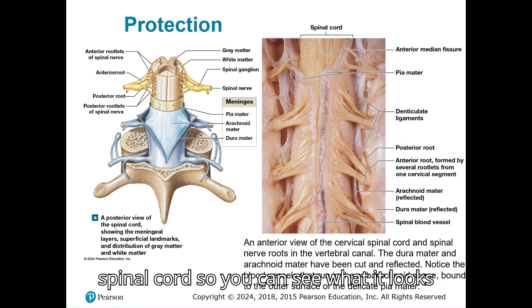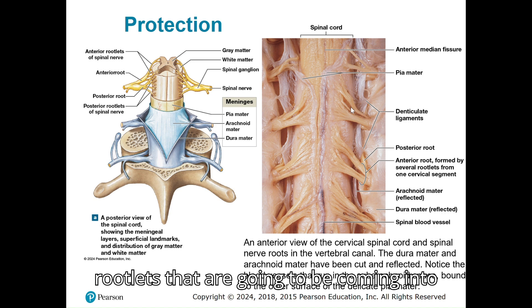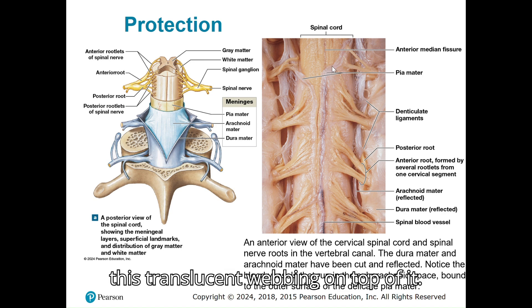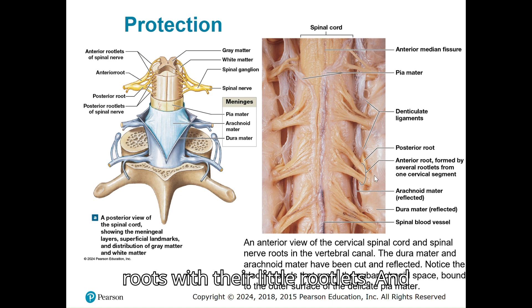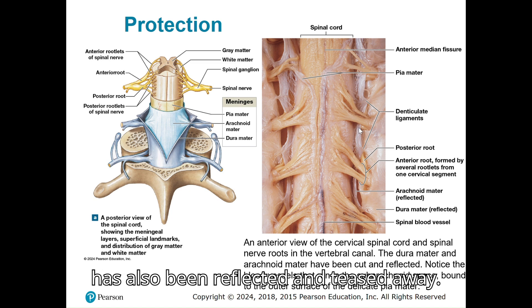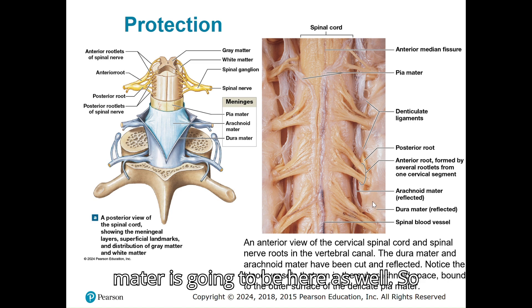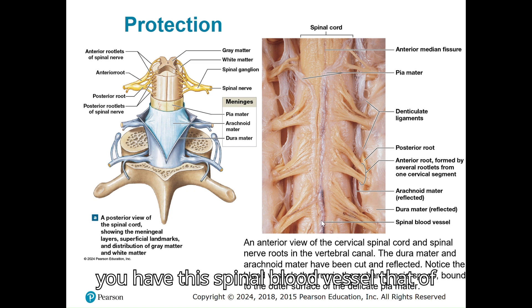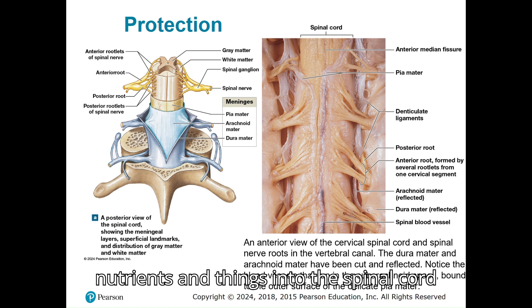Now we're looking at an actual dissected spinal cord. You can see the anterior median fissure — that divot in the very front — and the little rootlets coming into the spinal cord. There is a translucent webbing on top which is the pia mater, teased away so you can see the actual spinal cord tissue. There are ligaments holding and securing the spinal cord in place, posterior and anterior roots with their rootlets, and the arachnoid mater has also been reflected so you can see it between the pia mater and the dura mater. There is also a spinal blood vessel running through the meninges, feeding it and distributing nutrients into the spinal cord.